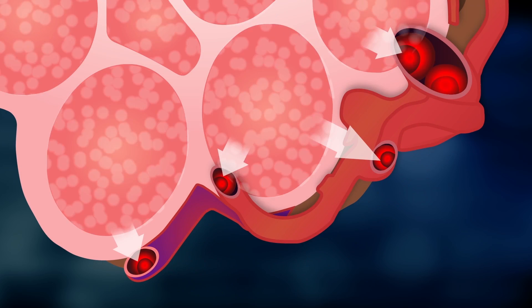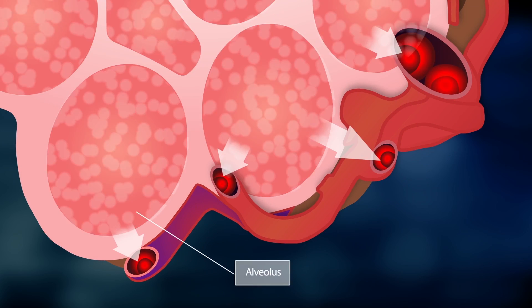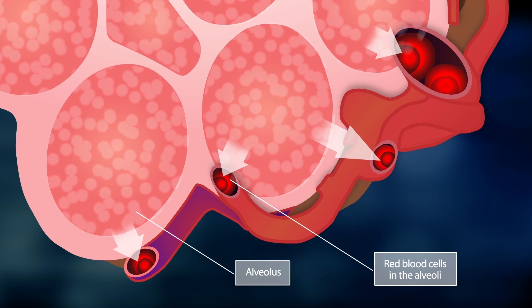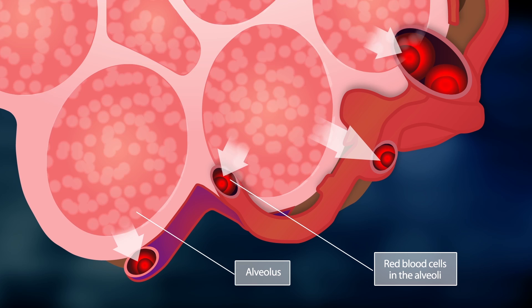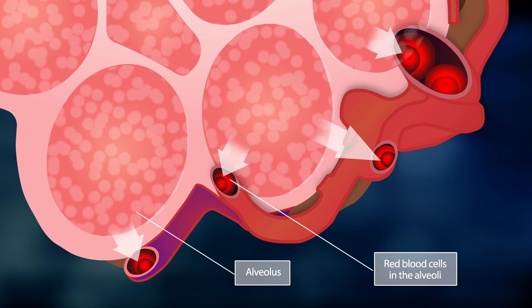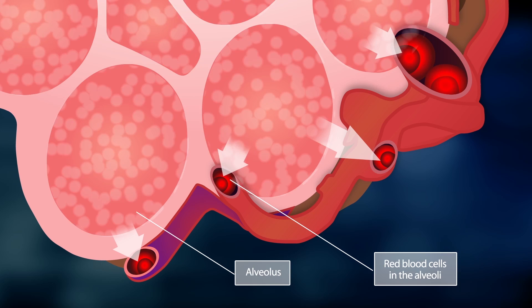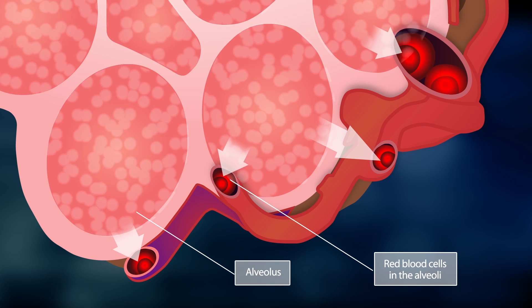Now the gas exchange between the air in the alveoli and the red blood cells from the capillaries takes place. During the gas exchange, oxygen from the air in the alveoli passes into the red blood cells. The blood is enriched with oxygen.